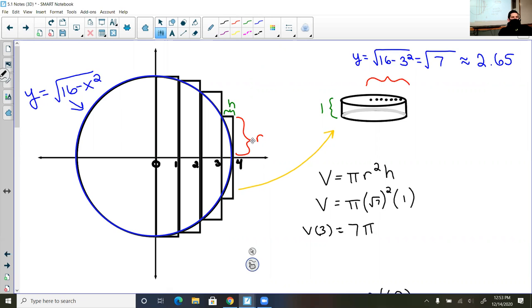Now, I labeled it as h and r, and I tried color coding it. So the height of my cylinder is going to be the width of my interval. So from three to four, that has a width of one. So the height of my cylinder is going to be one. Some people get a little confused, and they make the height being this, because it's the height of a rectangle.